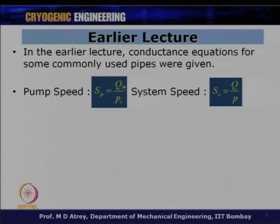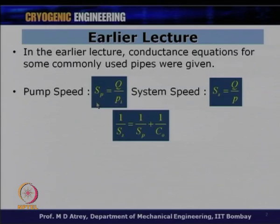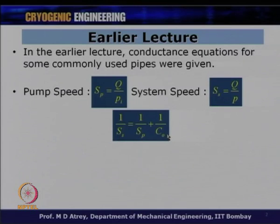The pumping speed depends upon throughput and the pressure — the vacuum you get at the inlet of the pump — while the system speed is basically due to conductance plus the pumping speed. Therefore, the system speed SS is going to be less than the pumping speed SP, and equals Q upon P. We have seen the equation: 1/SS = 1/SP + 1/CO, where CO is the conductance of the connector between the vacuum pump and the system to be pumped. SS is always less than SP and less than CO.